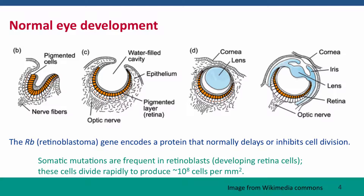In normal eye development, which is quite a cool thing, the eye starts just as a depression in a layer of cells on the surface of the embryonic head, and that depression forms a cup. The cells inside the cup divide and differentiate to form the retina, the light-sensitive tissue of the eye. Retinoblastoma occurs when there's a mutation in the gene named RB for retinoblastoma. This gene encodes a protein whose normal job is to delay or inhibit cell division as the retina matures, and it's time for the retinoblasts — the retinal precursor cells — to stop dividing. Somatic mutations are quite common in retinoblasts, perhaps because they have to divide very rapidly to produce the very high density of cells in our retina, which gives us such sharp vision.